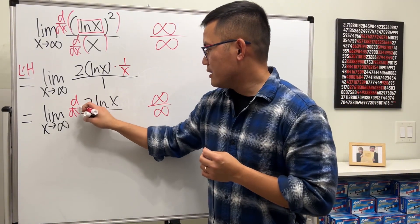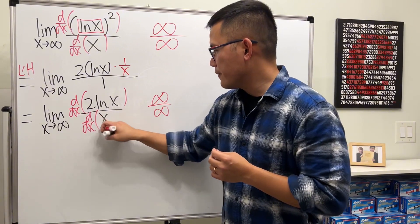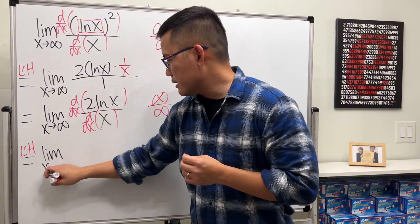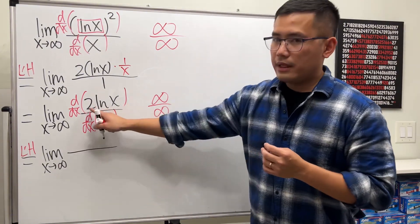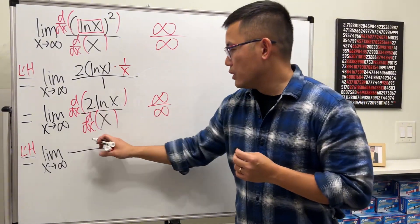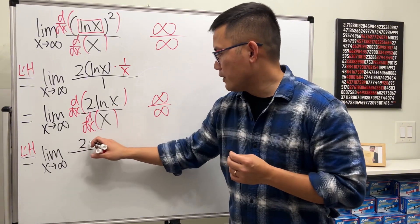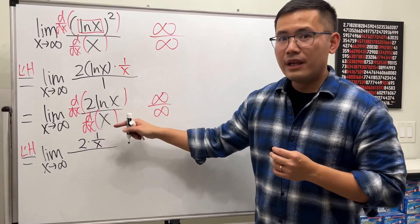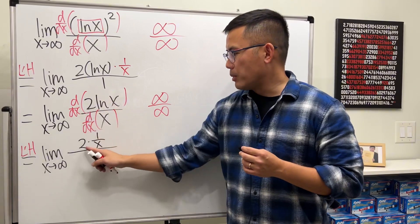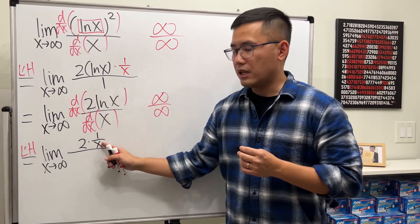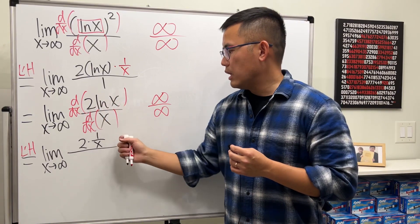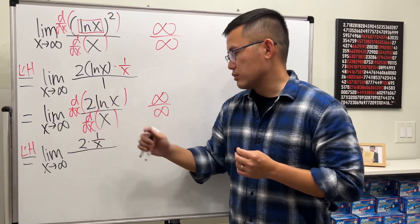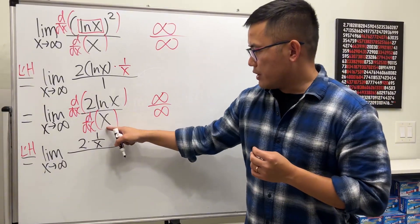So use L'Hôpital's Rule again. The derivative of 2 ln x: keep the constant 2 and multiply by the derivative of ln x which is 1/x. You don't need the product rule here since 2 is a constant. The derivative of x on the bottom is just 1. So we get 2 times (1/x) over 1.